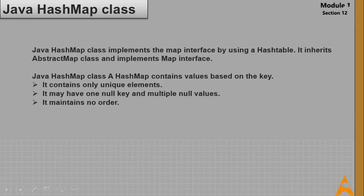Now let's discuss HashMap. Java HashMap implements the Map interface using a hash table. It inherits AbstractMap and implements Map interface. Key points: HashMap contains values based on key, contains only unique elements, may have one null key and multiple null values, and maintains no order.